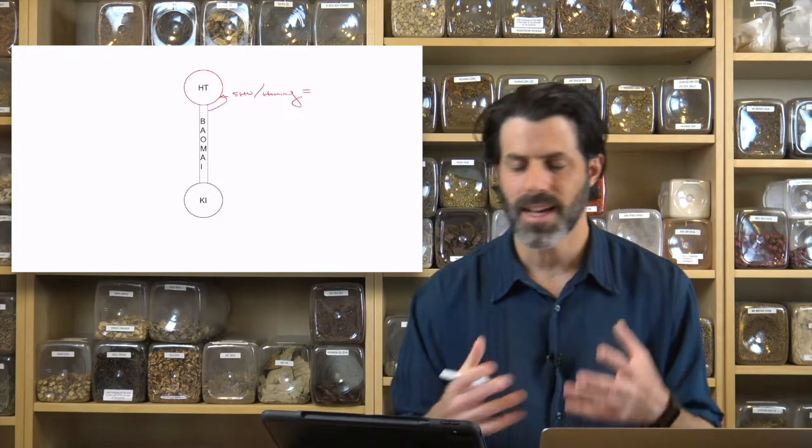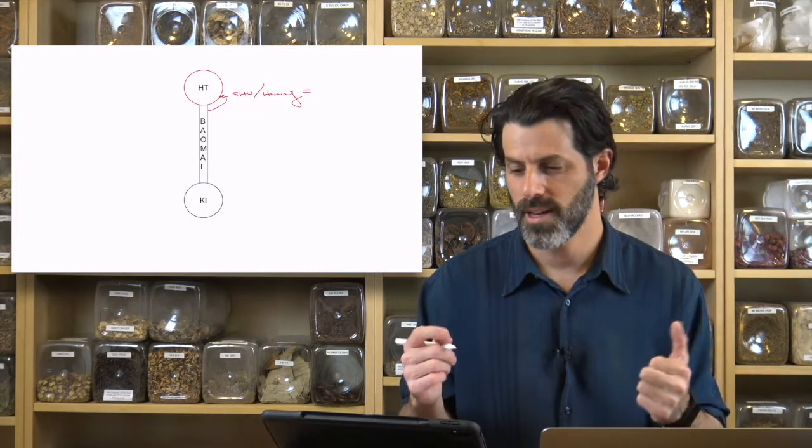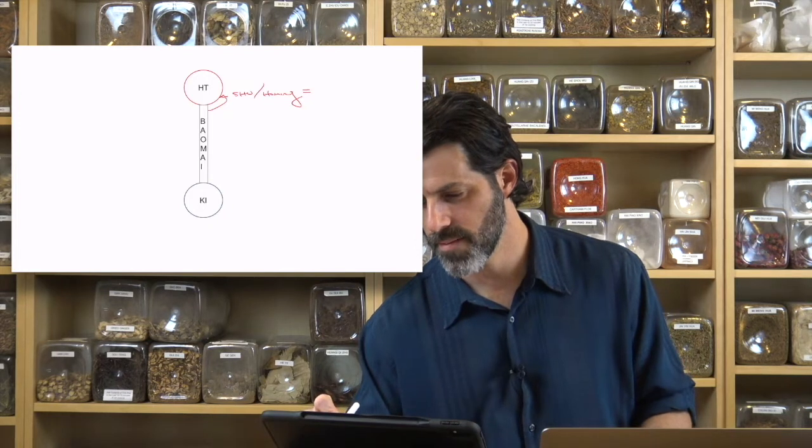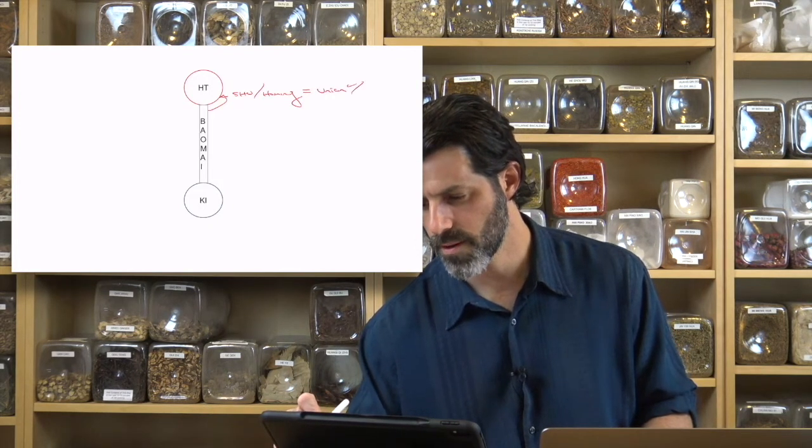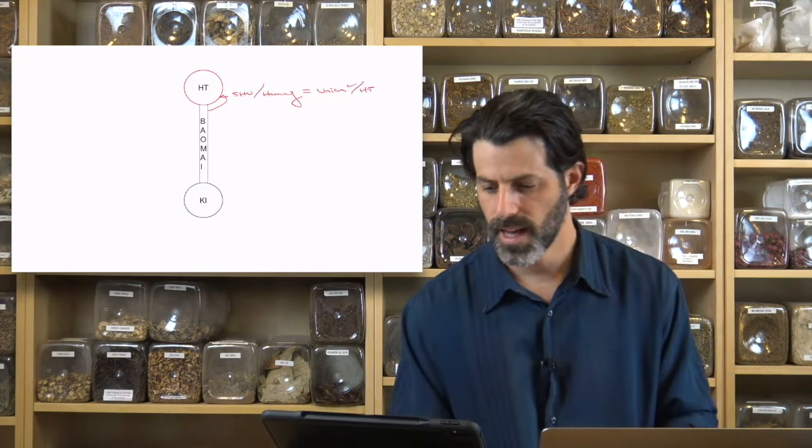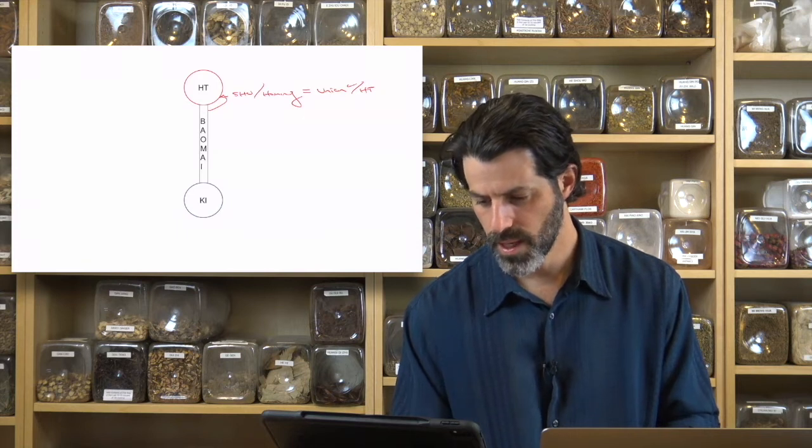This means it is united with the heart through the Shu relationship, and it has a Luo relationship to the kidneys.